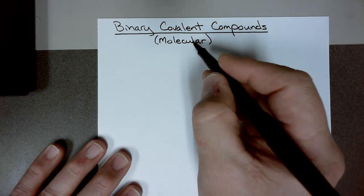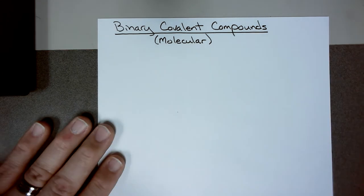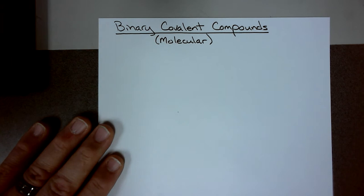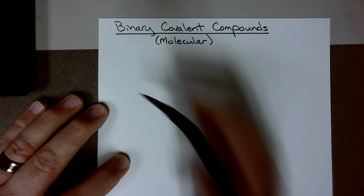Covalent and molecular can be interchanged and mean the same thing. Remember, with ionic compounds, when you have a formula in front of you, the first thing you need to do is make a decision on if it's ionic. The way you do that is you look and see if it has a metal. If it has a metal first and a nonmetal, it is going to be an ionic compound. So what kind of decision do you need to make with covalent compounds?